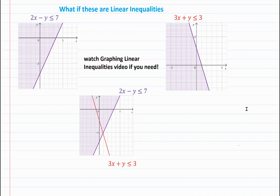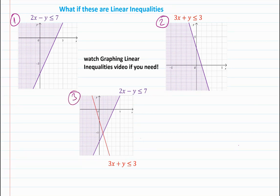Now let me show what happens with linear inequalities. If the purple equation is 2x minus y less than or equal to 7 and the red equation is 3x plus y less than or equal to 3, we graph each and place them on one coordinate plane to find where their solution sets overlap.